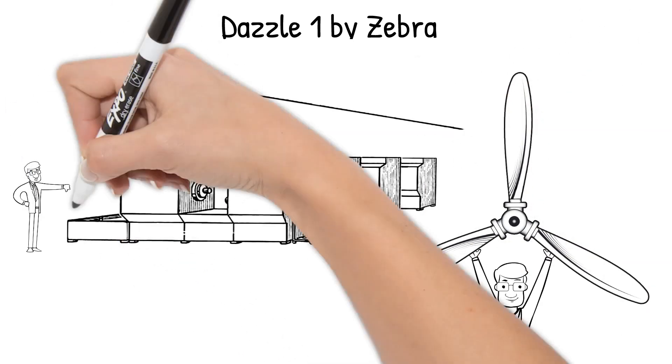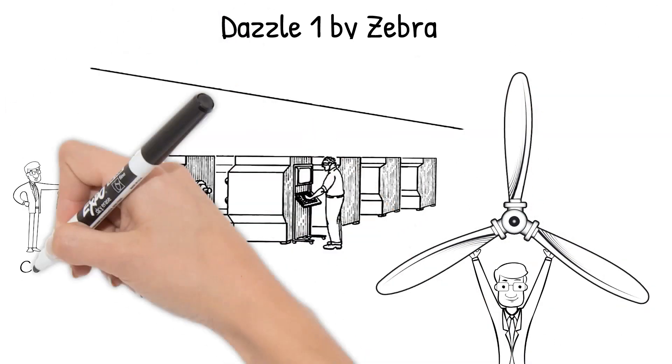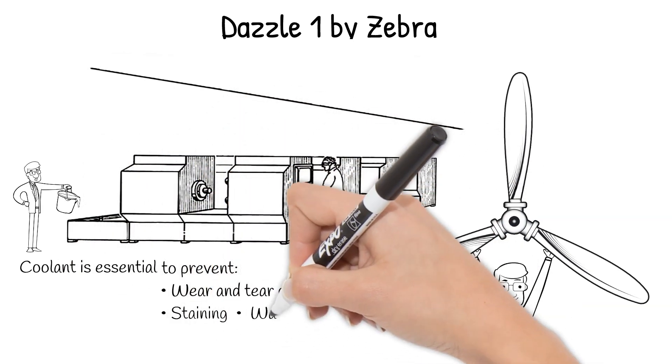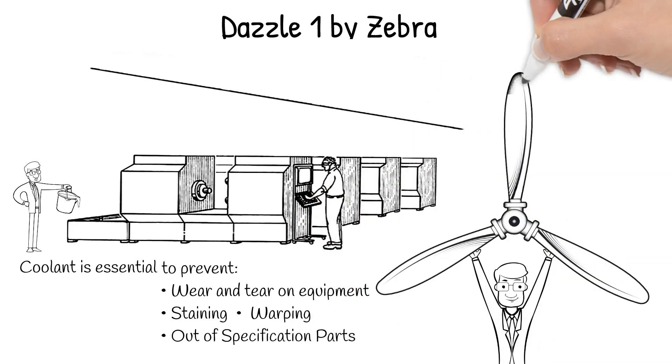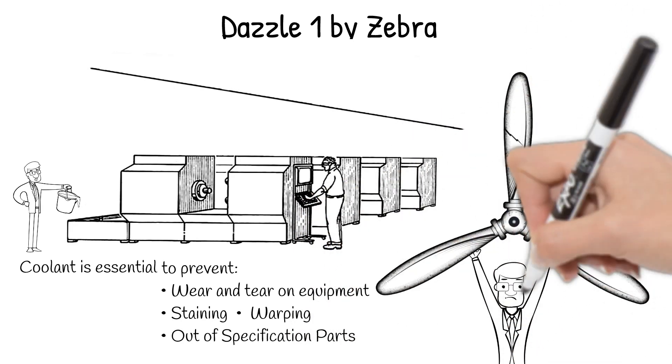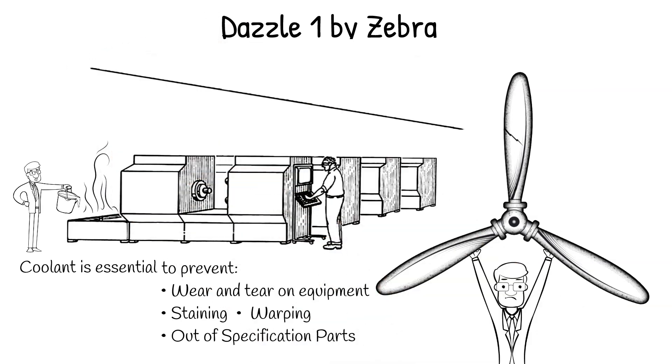However, one thing all of these machines and manufacturing techniques have in common is the need for coolant. Without proper coolant, these expensive tools will overheat and break. Parts will be stained or out of specification, quality and durability will suffer and your sump will be a bacterial soup.